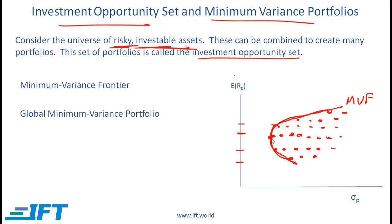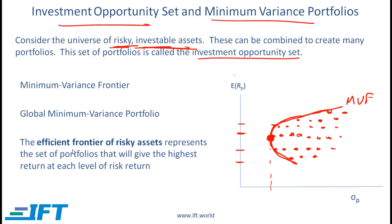The global minimum variance portfolio is fairly self-evident — that's the portfolio which has the lowest standard deviation or the lowest variance. You need to understand the efficient frontier, or more specifically the efficient frontier of risky assets. The efficient frontier is the part of the minimum variance frontier that is above the global minimum variance portfolio. You can think of the efficient frontier as all portfolios which give you the maximum return at each level of risk.